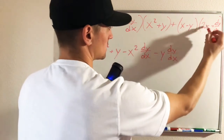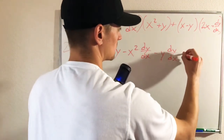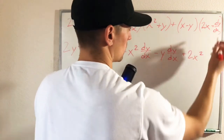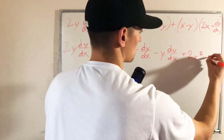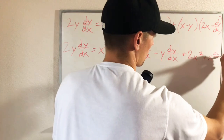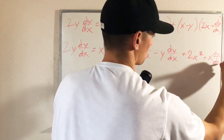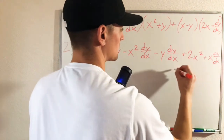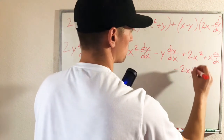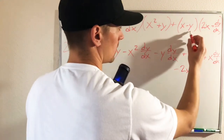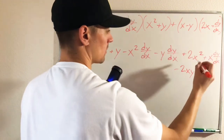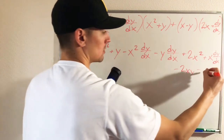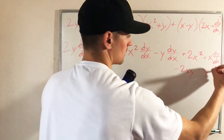And then we're going to foil out the second group as well. So x times 2x is going to give us 2x squared, plus x dy/dx. Minus y times 2x is going to be minus 2xy. And minus y times dy/dx is going to be minus y dy/dx.